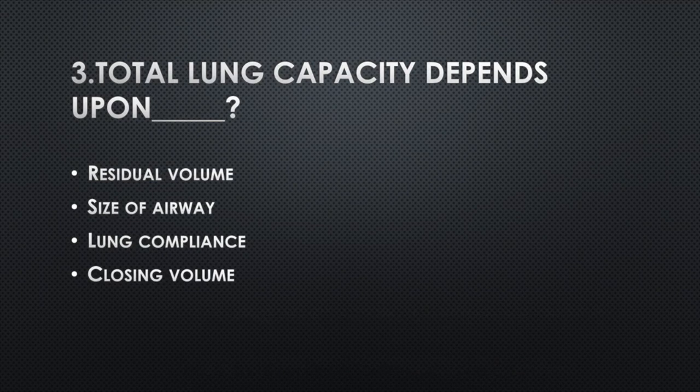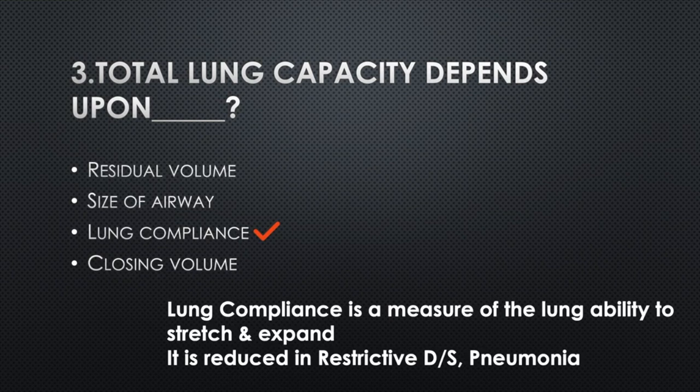Total lung capacity depends upon — Option A: Residual volume, Option B: Size of airway, Option C: Lung compliance, Option D: Closing volume. Answer: Option C, Lung compliance. Lung compliance is a measure of the lung's ability to stretch and expand. It is reduced in restrictive disease and pneumonia.